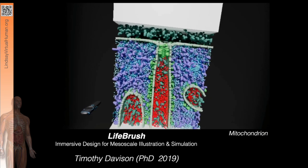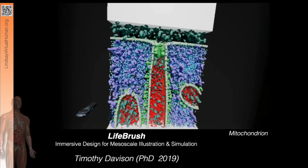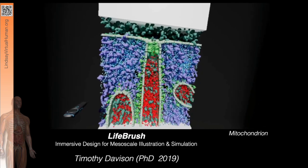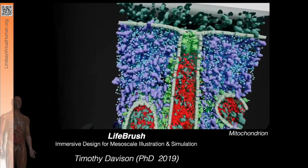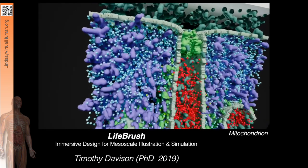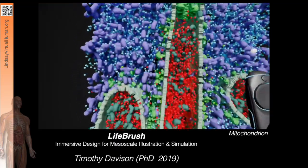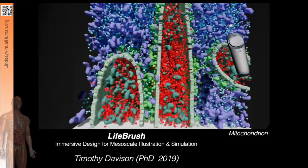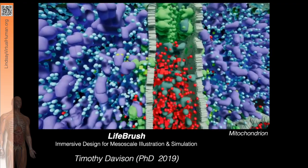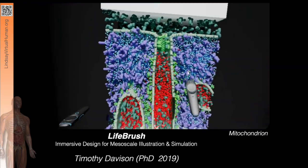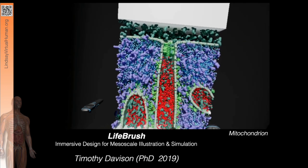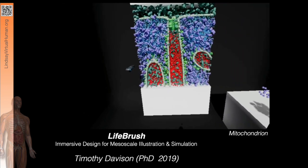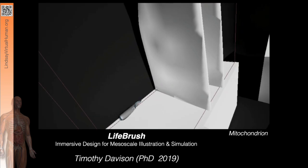LifeBrush is a tool for painting mesoscale illustrations that come to life through agent-based simulation. The mitochondrion is an organelle in eukaryotic cells that produces ATP, a molecule used by the rest of the cell to do work. ATP is produced by ATP synthase when a hydrogen gradient drives it like a motor to combine ADP, the blue spheres, into ATP.